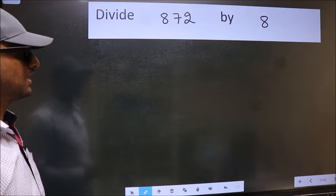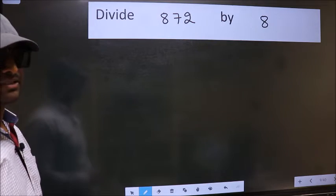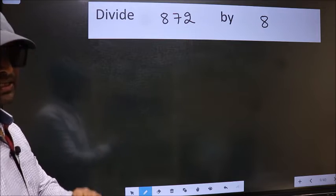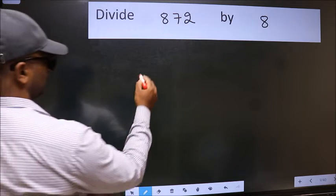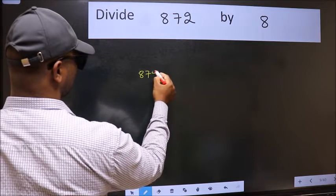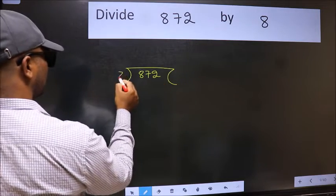Divide 872 by 8. To do this division, we should frame it in this way: 872 here and 8 here.